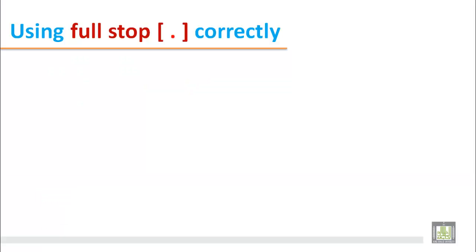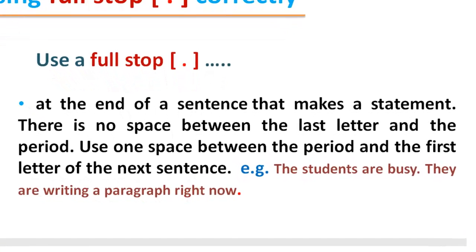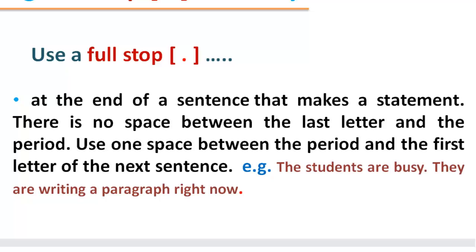Using full stop correctly. Use a full stop at the end of a sentence that makes a statement. There is no space between the last letter and the period. Use one space between the period and the first letter of the next sentence. Here is an example. The students are busy. They are writing a paragraph right now.